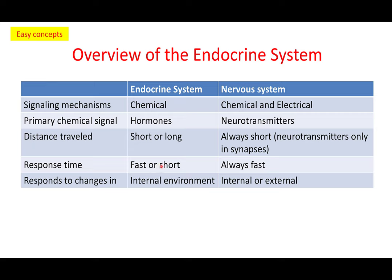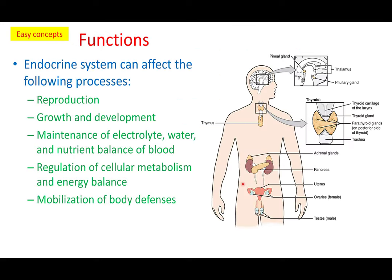Response time can be fast or short in the endocrine system. In the nervous system, it's always fast. In general, the endocrine system will always respond to the internal environment, whereas the nervous system would respond to both internal and external changes.